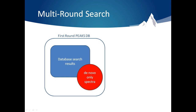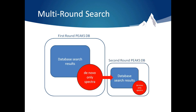Multi-Round Search takes the de novo only spectra and separates them from the scans already matched using the database search algorithm. It allows you to search just those spectra with different parameters. So you can choose a new database, different PTMs, different enzyme cleavage rules. The possibilities are endless.